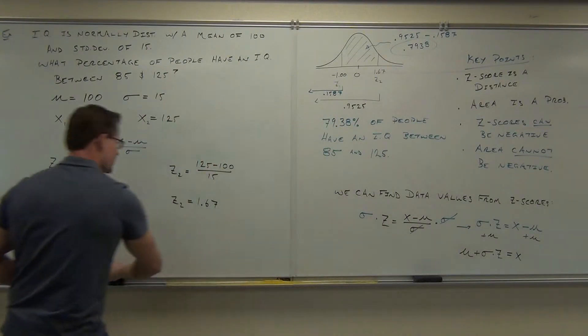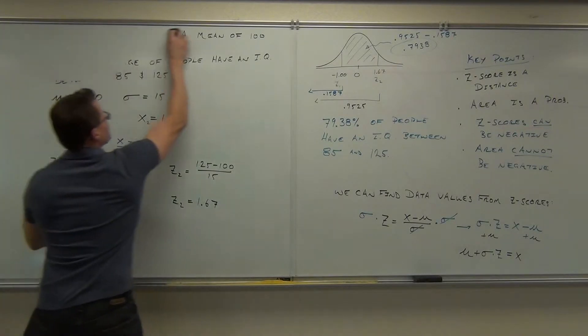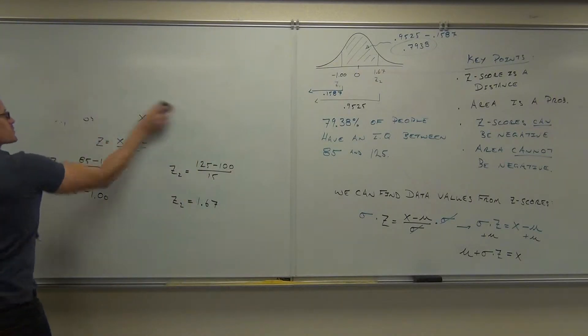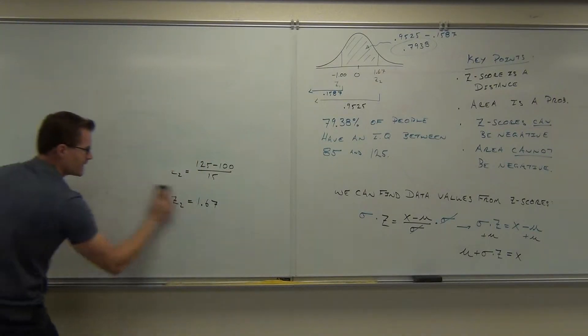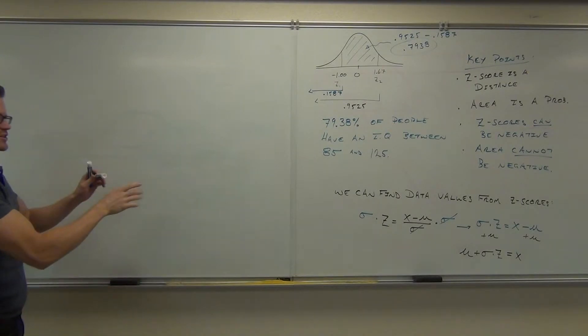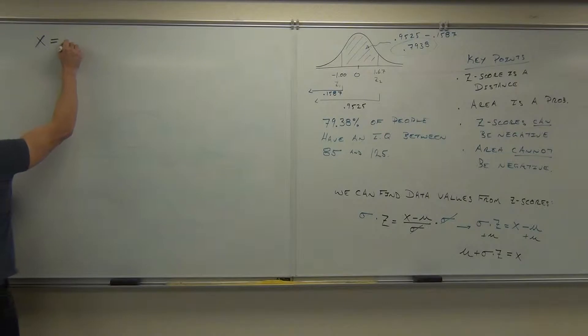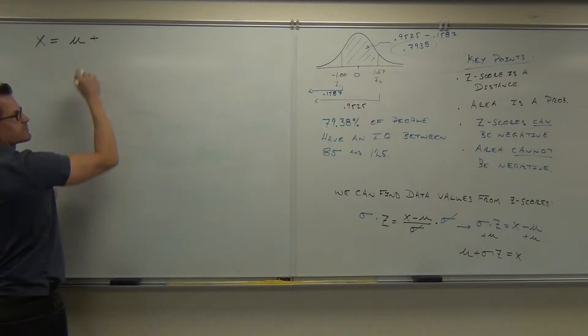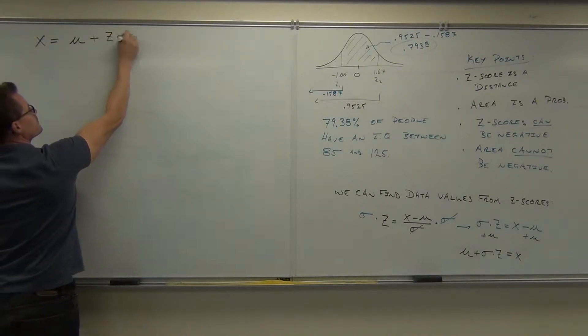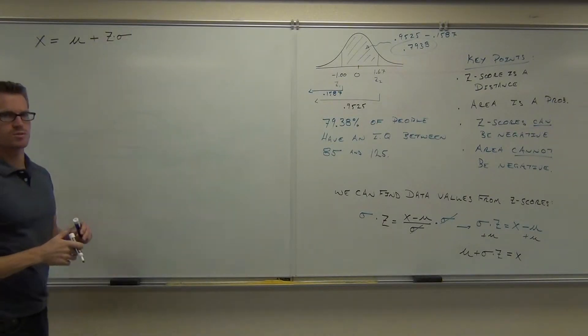And that really, which I'm going to rewrite over here so you can actually see, is the way we can translate a z-score into a data value. I'm going to rewrite it just slightly, I'm going to write the x on the left hand side, I'm going to write the mu plus either sigma z or z sigma, it really doesn't matter, so I'm going to write z times sigma just to switch it up a little bit.